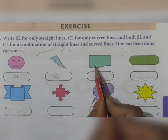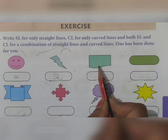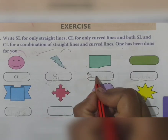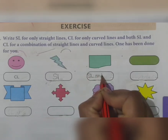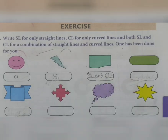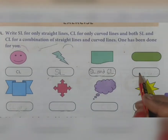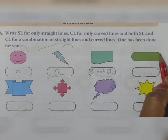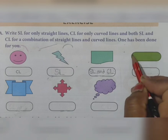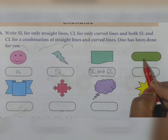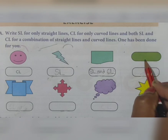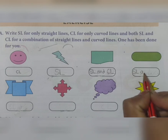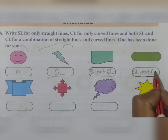There is a simple curve at the base, therefore this figure is a combination of straight lines and curved lines. So what we write is SL for straight line and CL for curved line - SL and CL. Now the next figure: there are straight lines here, but at the ends there are curved lines. Therefore this figure is a combination of straight and curved lines - SL and CL.